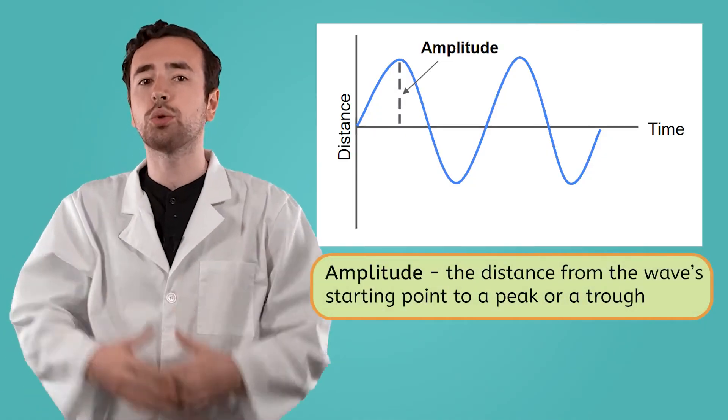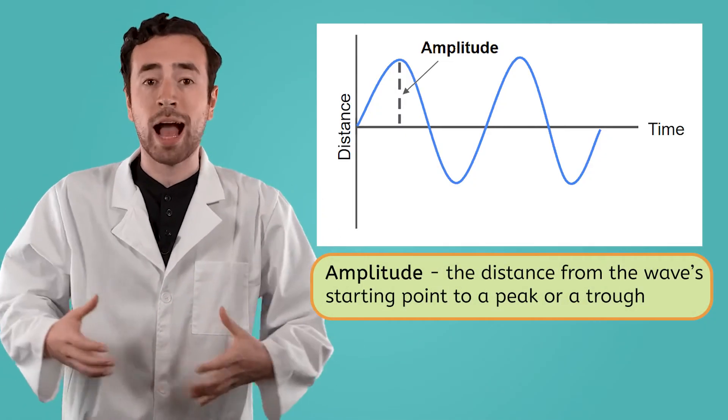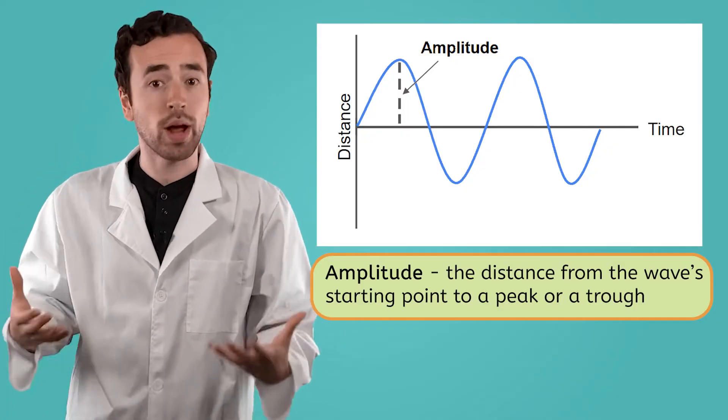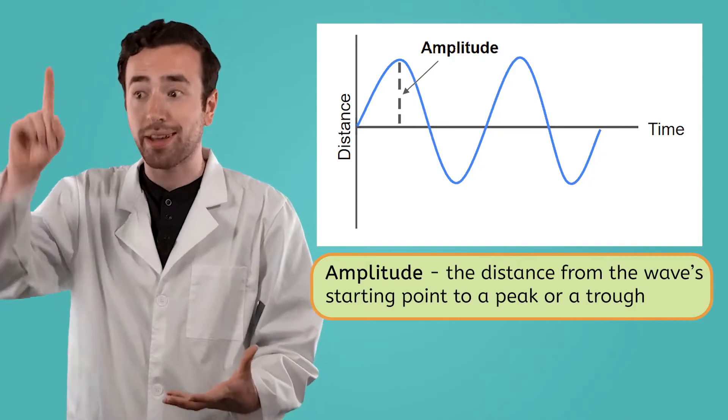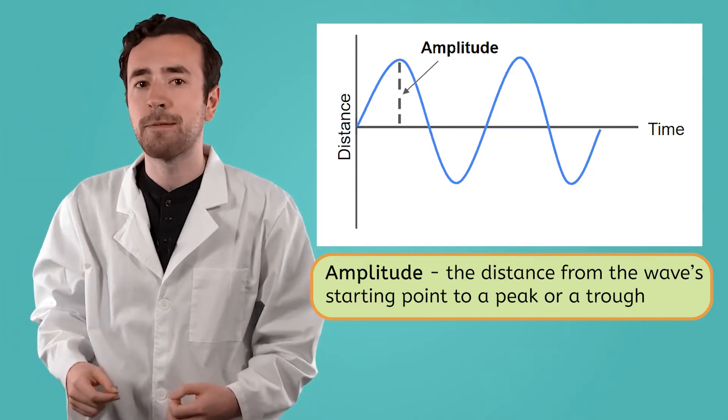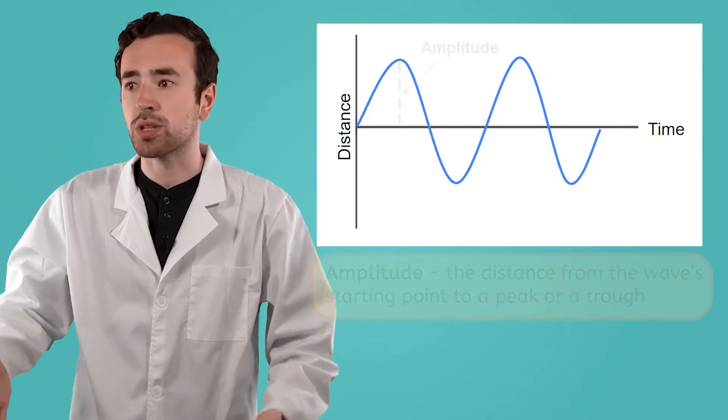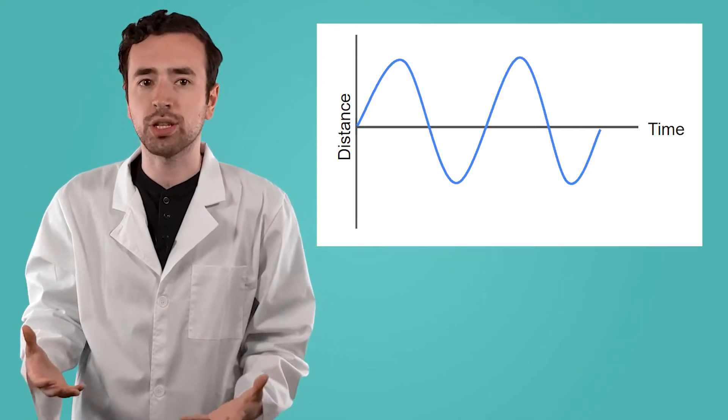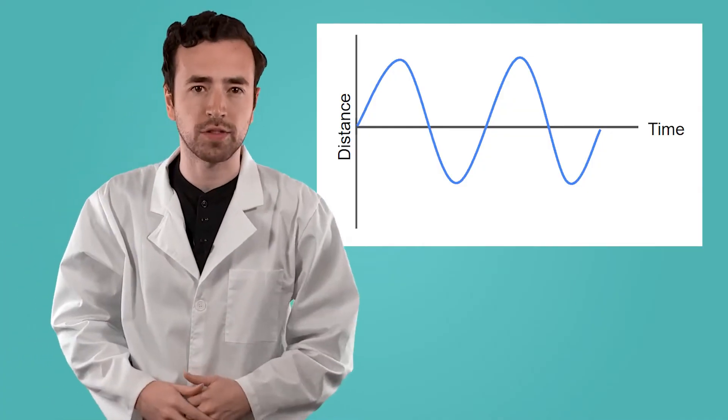Amplitude shows us the strength of a sound wave, or how much energy was behind the force that created it. The more energy, the farther back and forth the matter will vibrate. On a sound wave, more energy looks like taller peaks and deeper troughs, while less energy looks like shorter peaks and shallower troughs.